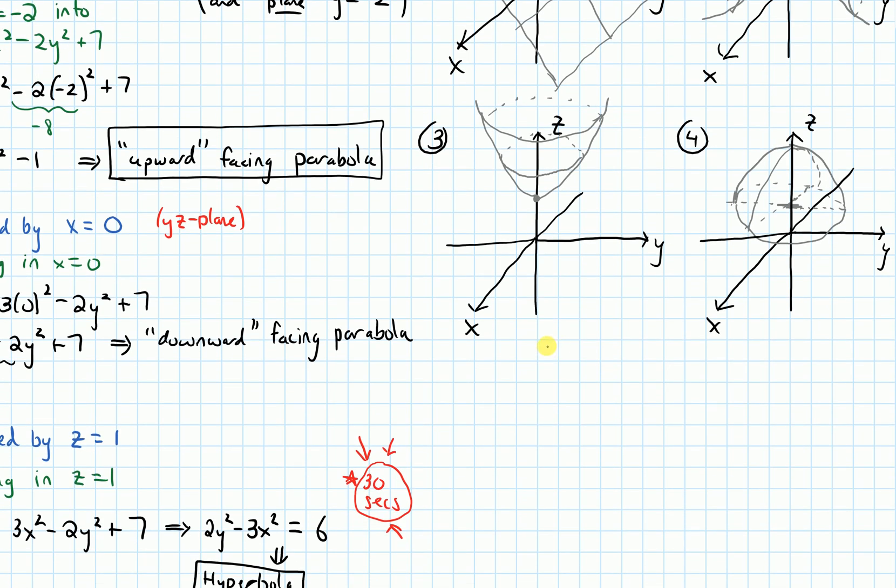What are some of the things that we've talked about? One thing that we've talked about is intercepts and how to find them. So let's maybe check the intercepts and see if that lets us use some process of elimination. Intercepts. So let's do it for the function in A first.